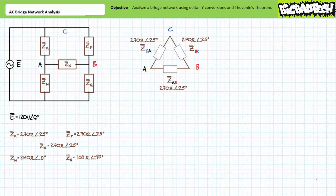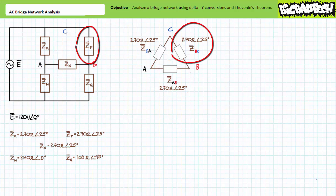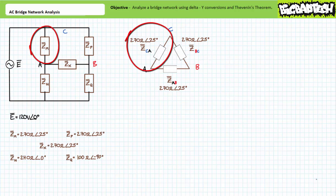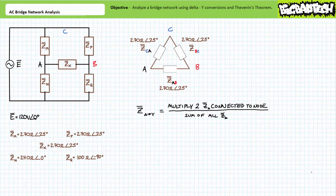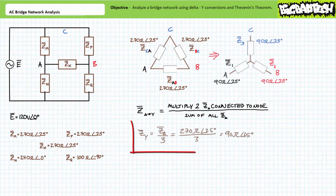Adding a third node C to the top of our delta configuration: delta impedance ZAB is element ZX between nodes A and B, delta impedance ZBC is element ZP between nodes B and C, and delta impedance ZCA is element ZM between nodes C and A. The general formula for converting a delta impedance to a Y impedance multiplies the two delta impedances connected to each node and divides by the sum of all delta impedances. Since this is a balanced delta, we use the shortcut: each balanced Y impedance equals one-third the delta impedance magnitude, giving ZY = Z_delta / 3 = 90 ohms at 25 degrees.